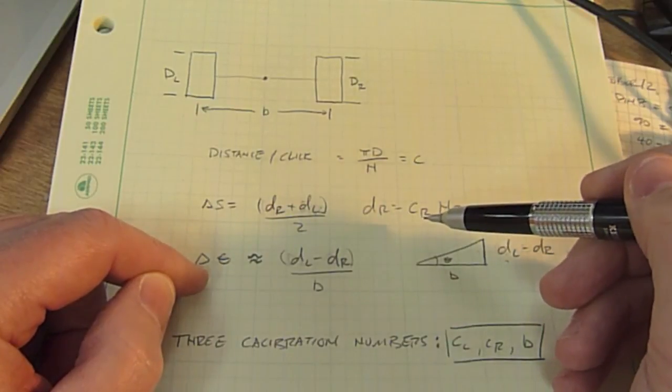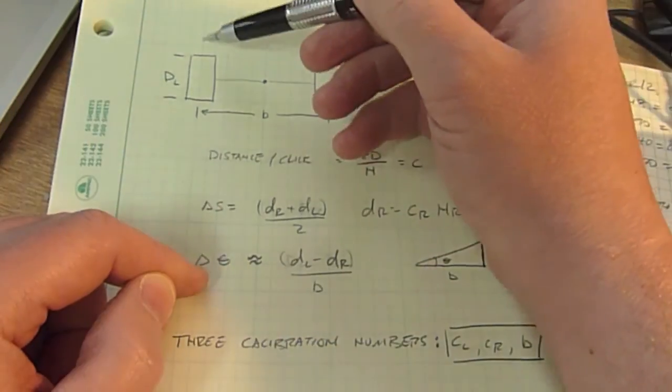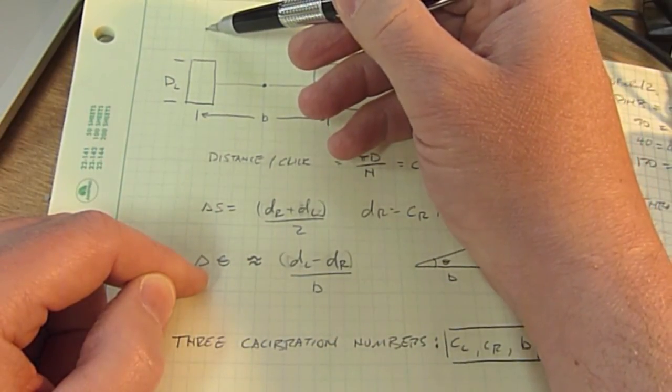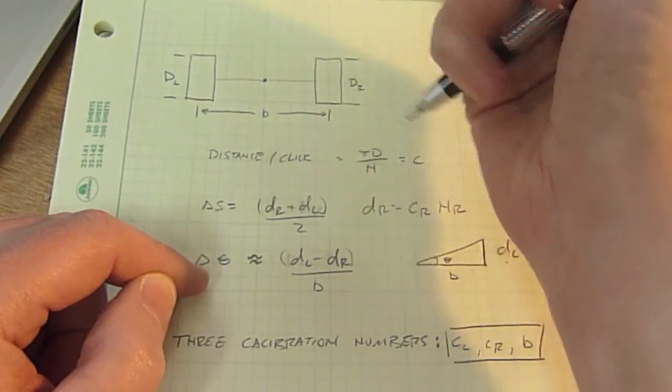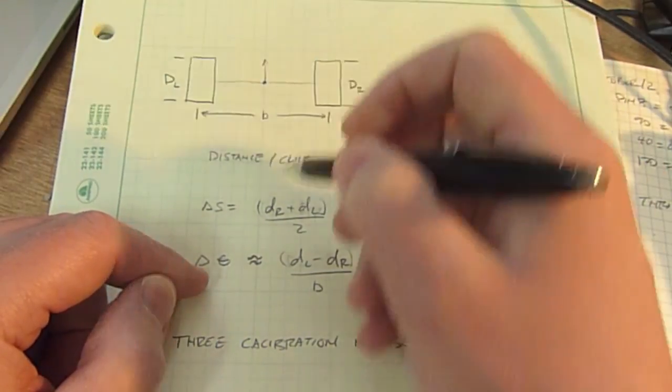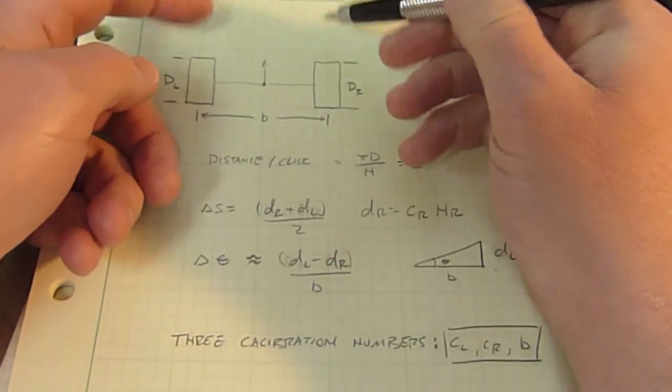If you're traveling forward and this wheel moves forward DR and this wheel moves forward DL, then the distance that the center line between the wheels has moved in this direction, delta S, is just DR plus DL over two. It's the average motion of the two wheels.